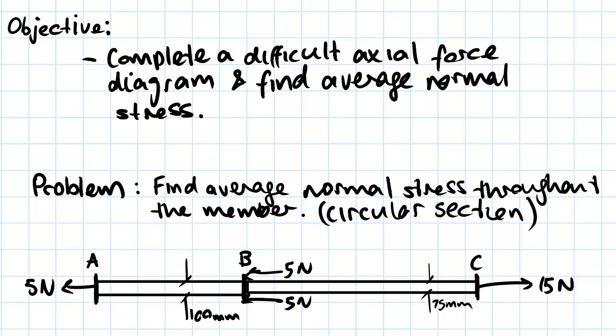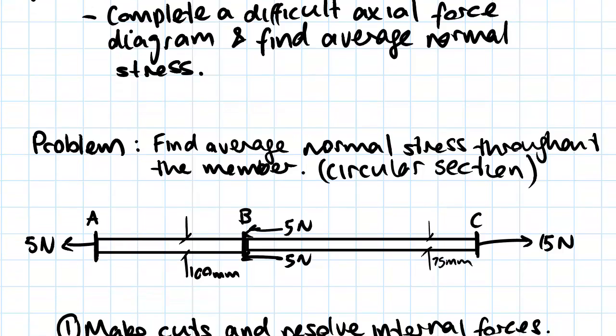The problem we have is we've been asked to find the average normal stress throughout the member. We've been told that it is a circular section and you can see that this section from A to B has a diameter of 100 millimeters. This section from B to C has a diameter of 75 millimeters and you can see that it is loaded in this way.